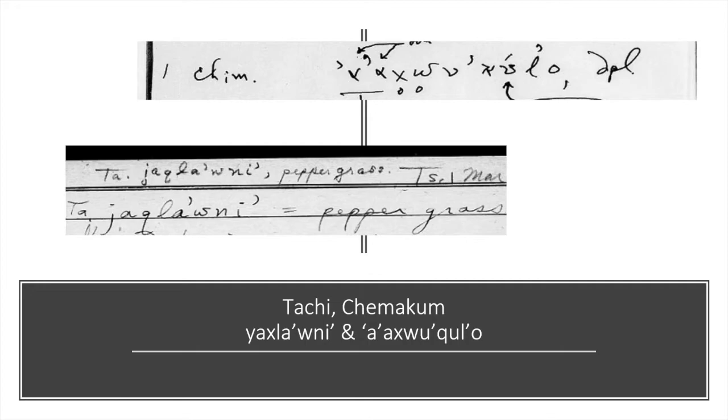So, if we look here, here's another example with Chimakum, a language spoken in Washington. So, the word for two Chimakum people is a-whoa-khol-o. So, we see that X with the circle under it. We'll explain what the circle is later. But, basically, it's the kh-kh-kh. The X is the same as the IPA symbol.